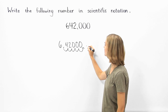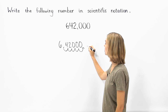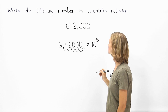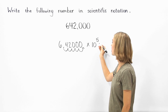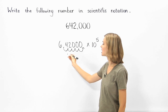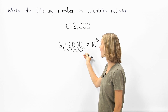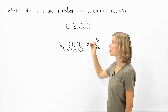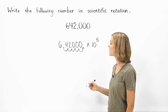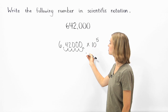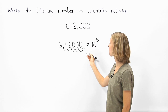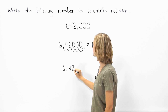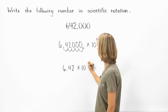This means that we need to multiply 6.4200 times 10 to the 5th power. Notice that our exponent is positive — that's because we needed to move the decimal point to the right to get back to the original number. So 642,000 can be written in scientific notation as 6.42 times 10 to the 5th power.